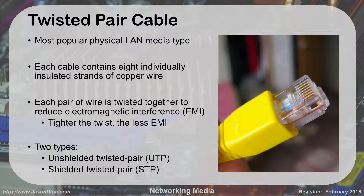Twisted pair is the most popular type of physical media we use on our networks. Each cable on the inside has eight strands of wire, set in pairs that are twisted around each other — which is why we call it twisted pair cabling. The tighter the twist, the less electromagnetic interference we experience. Higher quality cables like Cat 6 or Cat 7 have more twists per inch than an older Cat 5 cable.